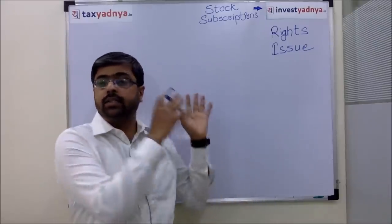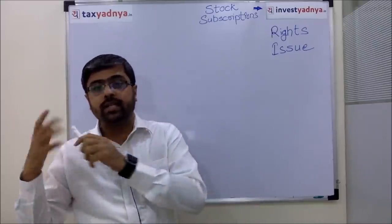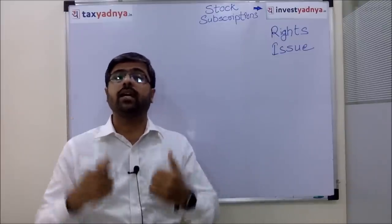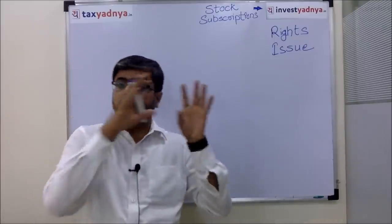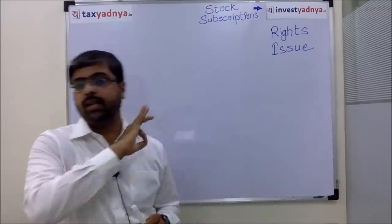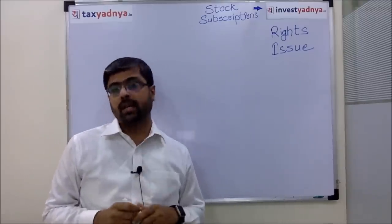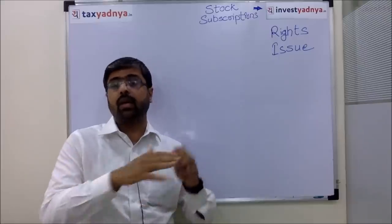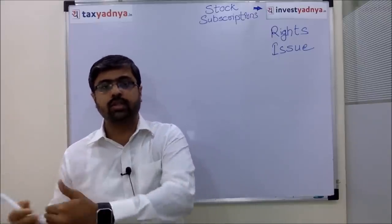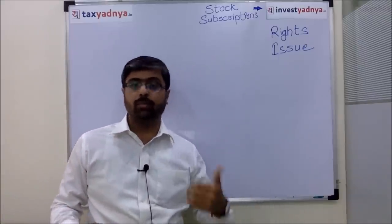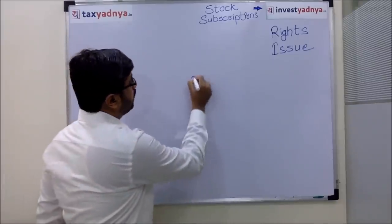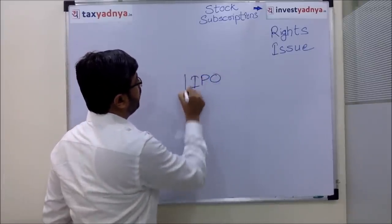The rights issue is particularly related to equity shareholders. When companies raise money, the rights issue comes under equity fundraising. So people can raise money through equity. Almost in the process of listing, or after listing, they raise money. First of all, you should know that the initial public offer is an IPO.